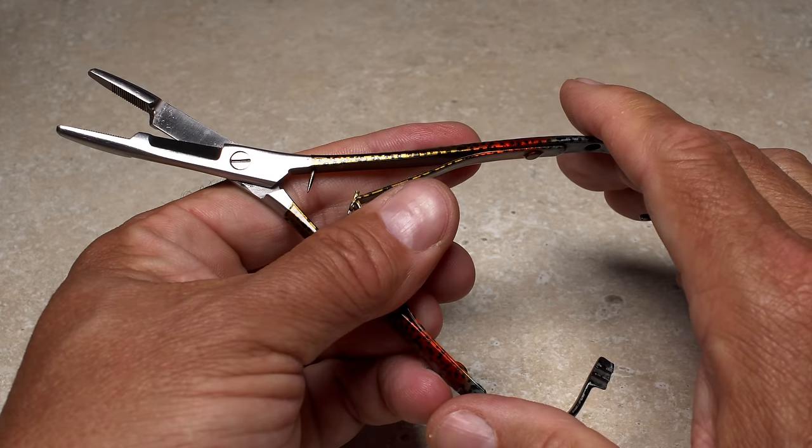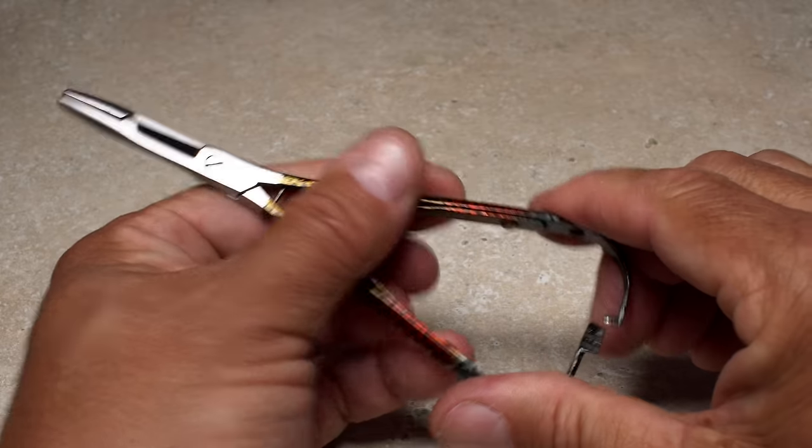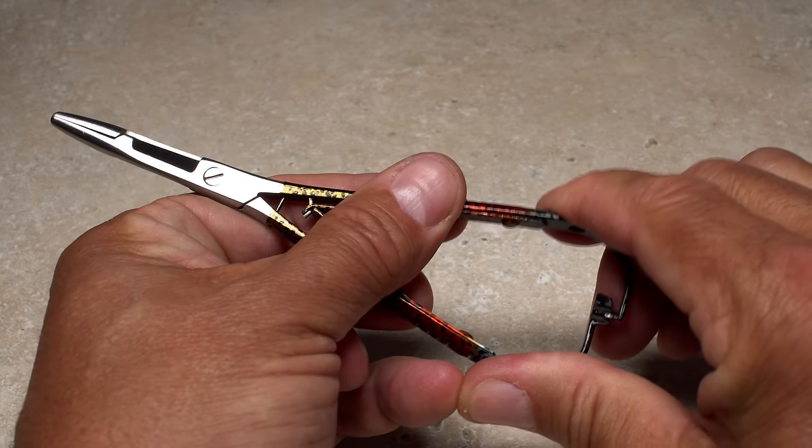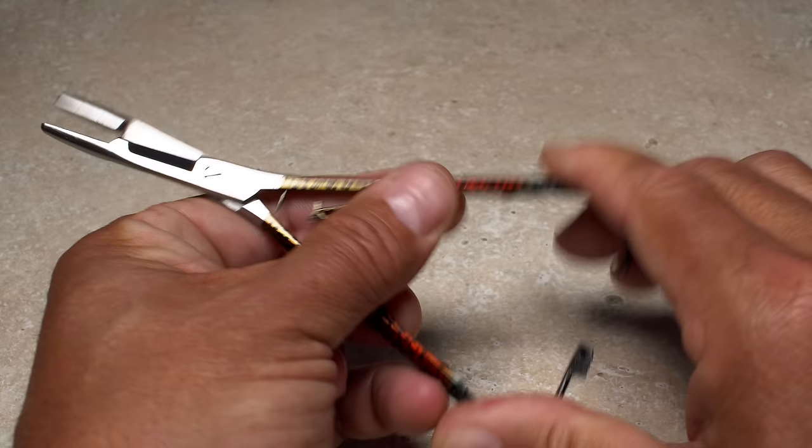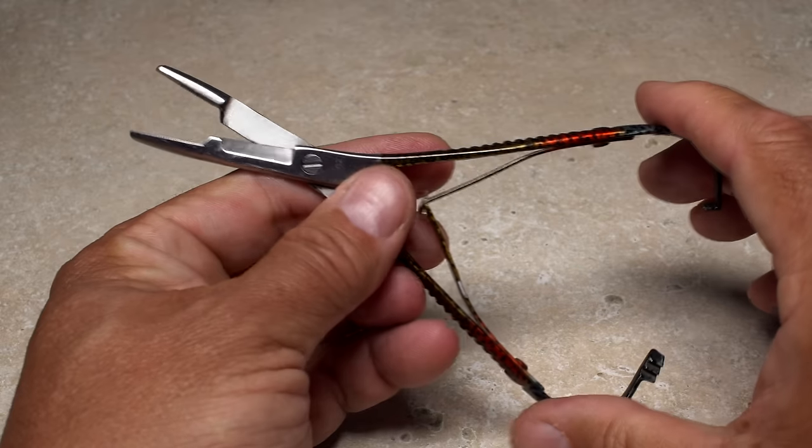What really makes this tool different is how it clamps. One click to clamp, a second click to clamp a little tighter, but a third click completely releases the tool and uses a spring to open its jaws.